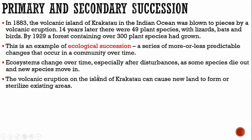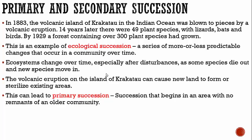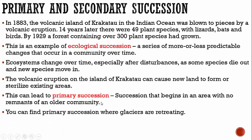The volcanic eruption on the island of Krakatoa can cause new land to form or sterilize existing areas. When we say sterilize, we mean get rid of all life — make it completely clean with no more life there. This can lead to what's called primary succession, which is succession that begins in an area with no remnants of an older community.